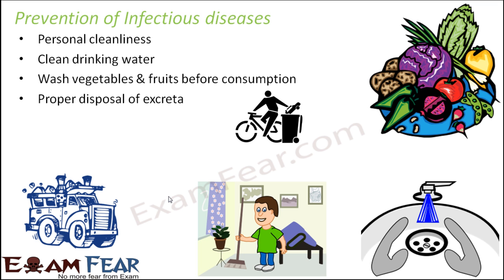Proper disposal of excreta is extremely important. In many slums, people do not use proper toilets — many use open areas or fields, which is extremely harmful. The excreta contains a lot of pathogens which can cause diseases, and if done in an open place, flies and other insects can act as transmitting agents, spreading those pathogens from one person to another.